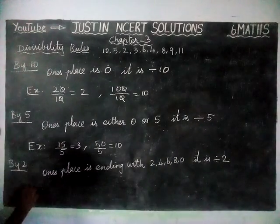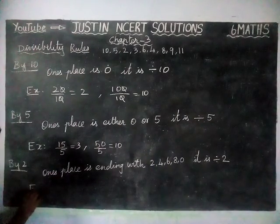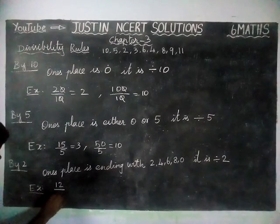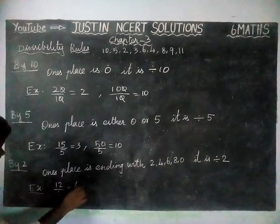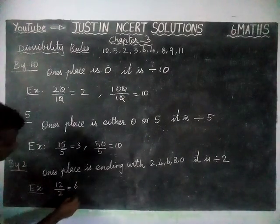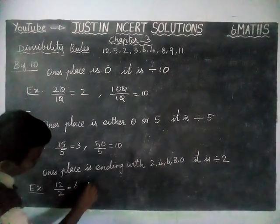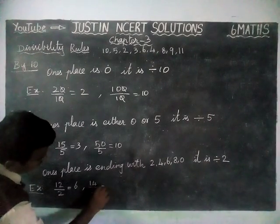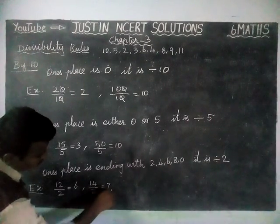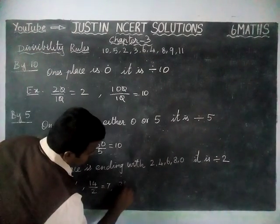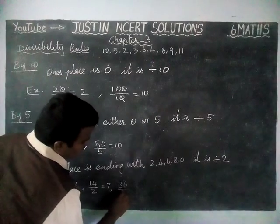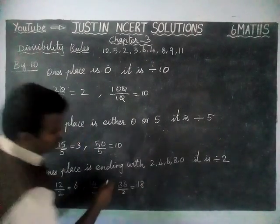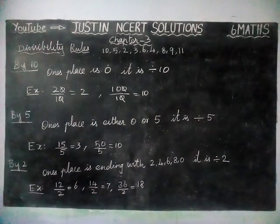We will check it by using examples. We will take number 12 — 6×2 are 12. Next, we will take number 14, dividing by 2 we get 7. Next, we will take 36 — the last number is ending with 6. 18×2 are 36. Like that, we can give any examples.